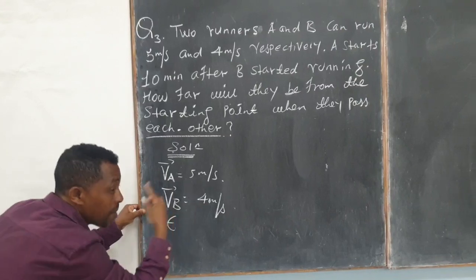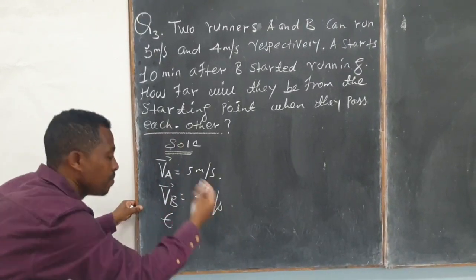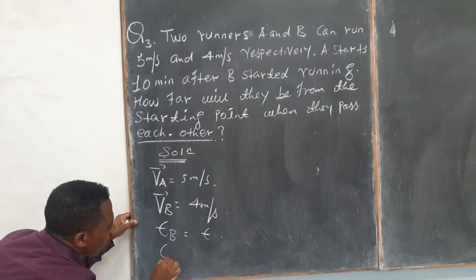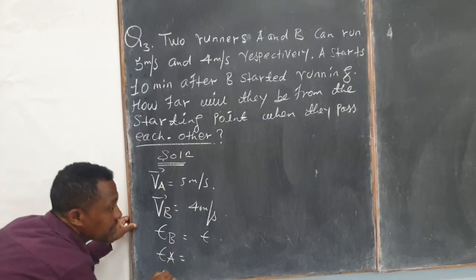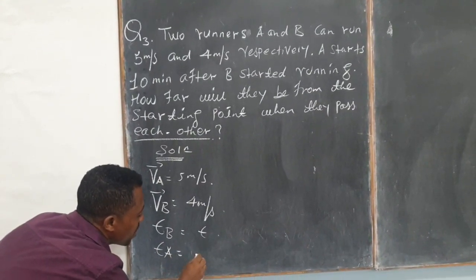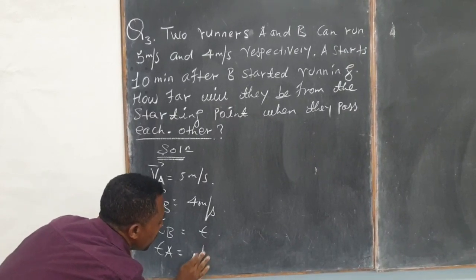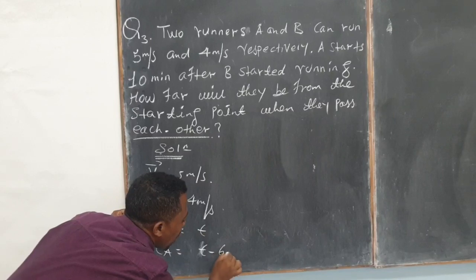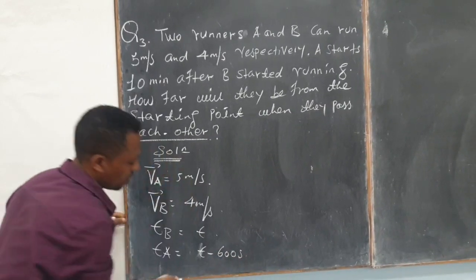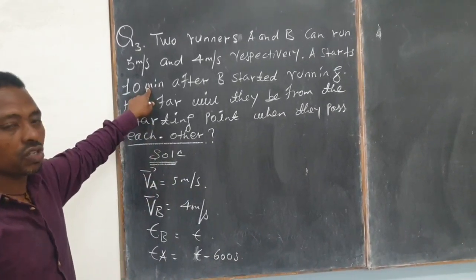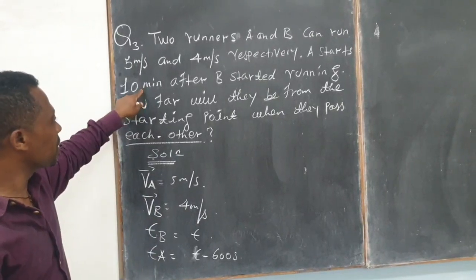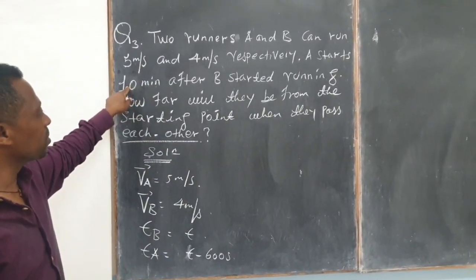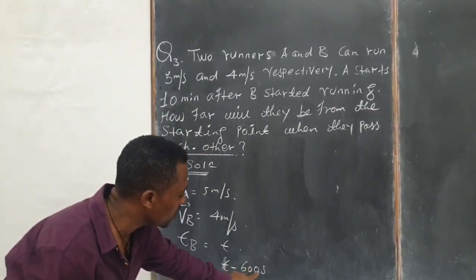And then the time taken for runner B is TB, and the time taken for runner A is T minus 600 seconds—that's 10 minutes, which becomes 600 seconds.